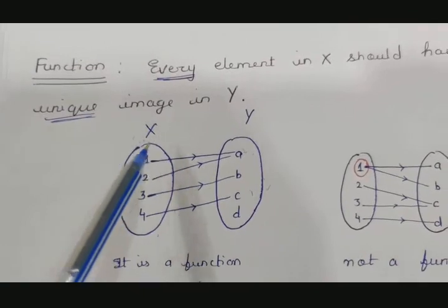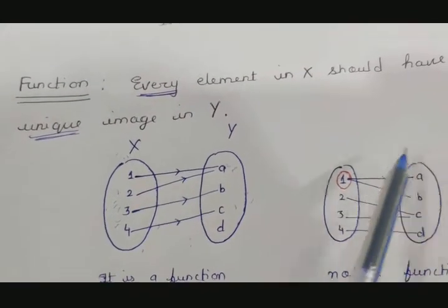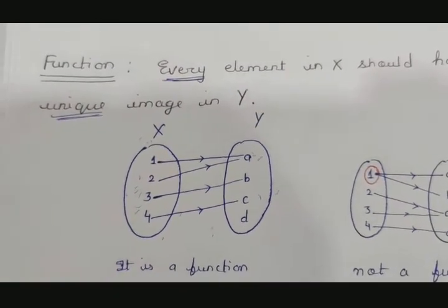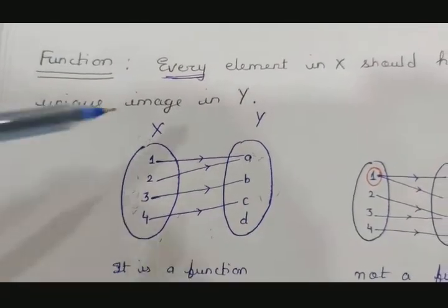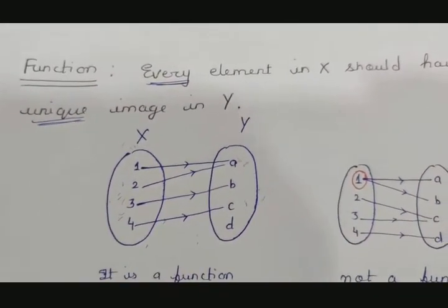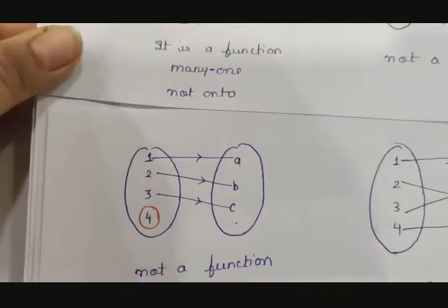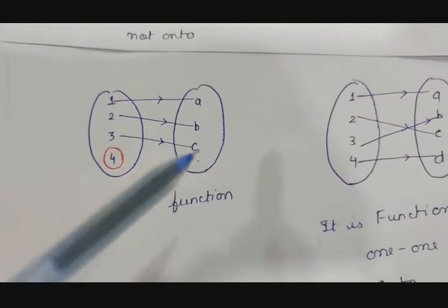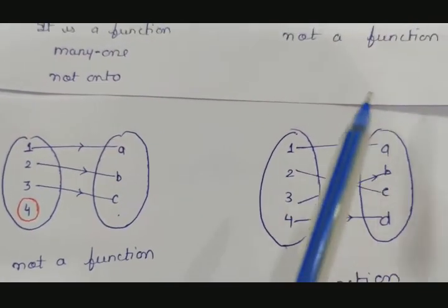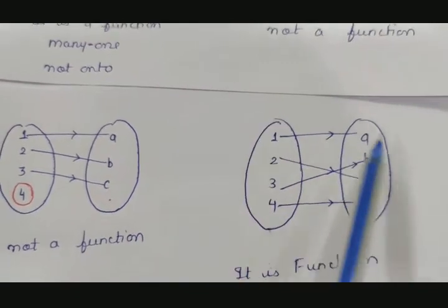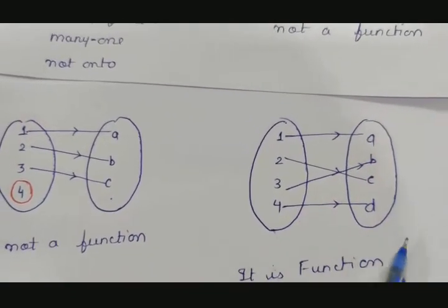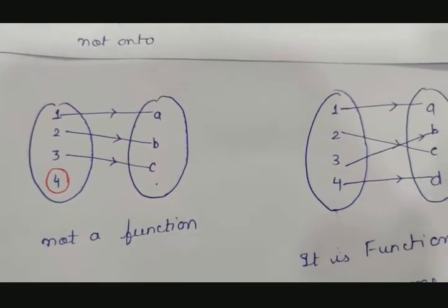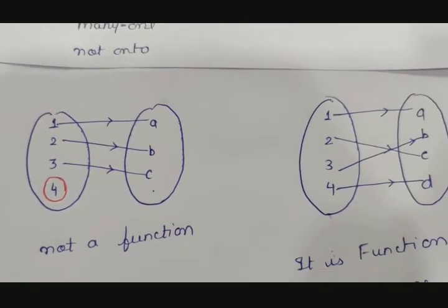Two elements can have the same single image, but one element cannot have two images. Looking at another example: this is not a function because element 4 in x has no image formed in y. And this is a function because all elements — 1, 2, 3, and 4 — each have a single image. So a relation is called a function only when every element in x has a single and unique image in y.